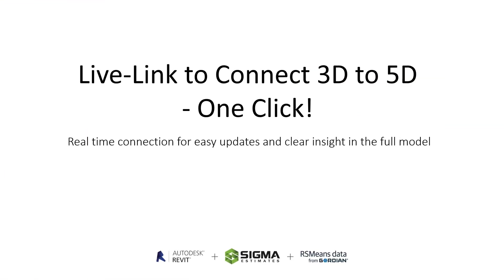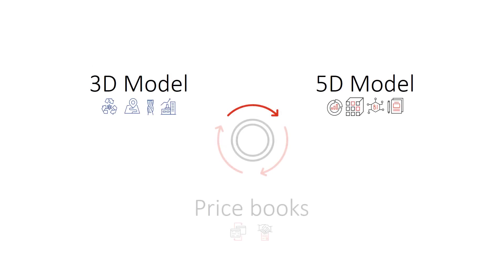Now let's consider how you work with 3D models in Sigma. 3D models provide estimating elements such as walls, doors, roof, and so forth, and will provide quantities and logical structures. With Sigma you have a live link with Autodesk Revit that makes it very easy to reuse model data. Let's see how easy this is.